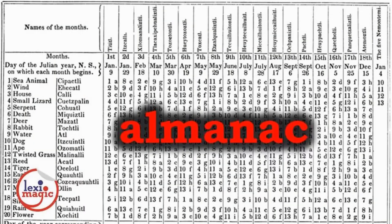Almanac is a yearbook that contains all relevant dates and information of that specific year. Its origin is from the Spanish-Arabic word 'almanac', meaning a calendar.